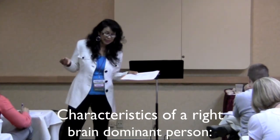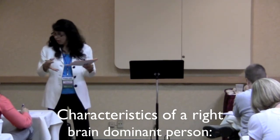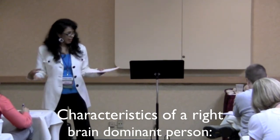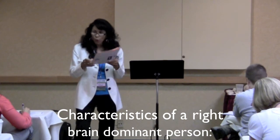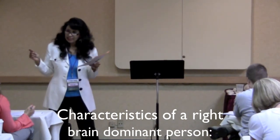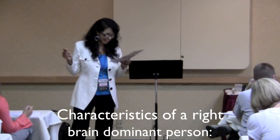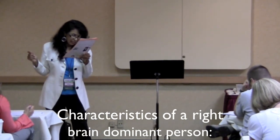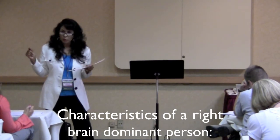Right brain learners can be dreamers, need hands-on activities, often have poor spelling, can't sit still for very long, and are more responsive to informal settings.